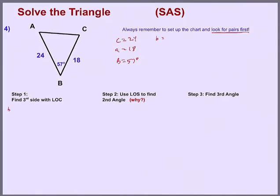I'll start by setting up my law of cosines with the side we're looking for and the angle that we have in the problem. We need to make sure we use the version that has the cosine of B in it. So that would be B squared equals A squared plus C squared minus 2AC cosine of angle B. We know A is 18 and C is 24, times the cosine of 57 degrees.